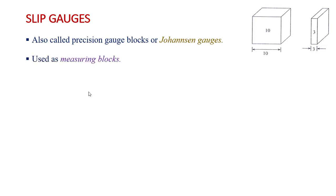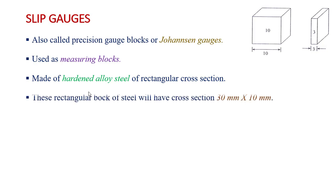These are used as measuring blocks made of hardened alloy steel of rectangular cross section with 30 x 10 mm. These slip gauges are available in standard sets of 32 pieces, 45 pieces, and 88 pieces.